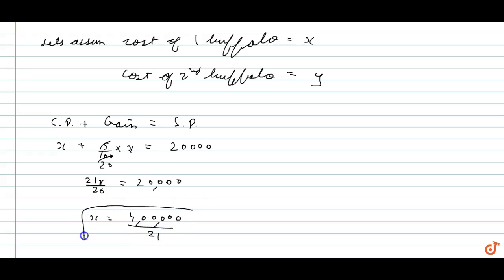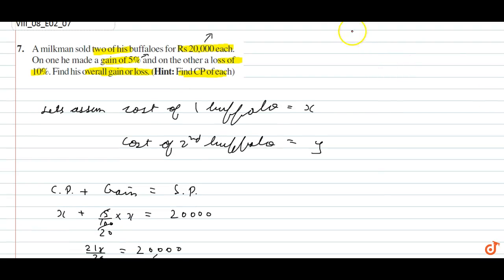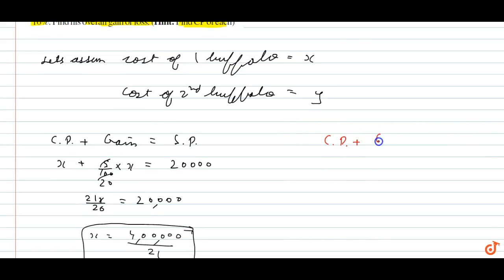This is the cost price of the first buffalo. Similarly for the second, CP plus loss equals SP. CP minus loss. So y minus 10% of y equals 20,000. 9y upon 10 equals 20,000. So y equals 200,000 upon 9.